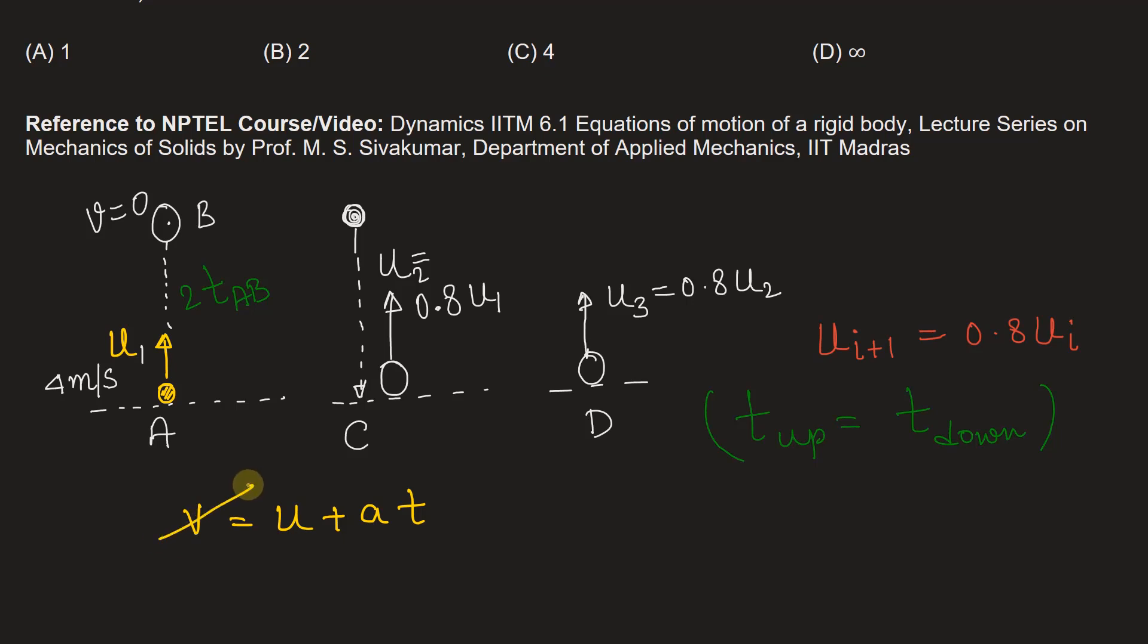And v is the final velocity, which is zero. When the ball reaches point B, the final velocity is zero. So from here, we can calculate T.